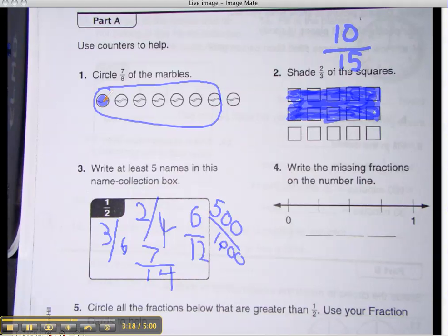Alright, number four. Write the missing fractions on the number line. Who can come up and do that? Tori. Write the missing fractions. There's three missing fractions. One-fourth. One-half. Perfect. Nice job, Tori.